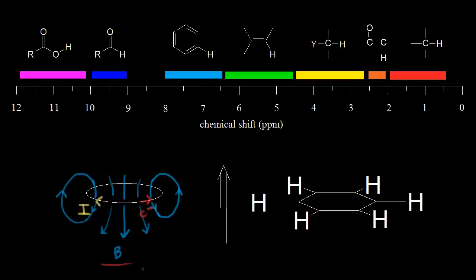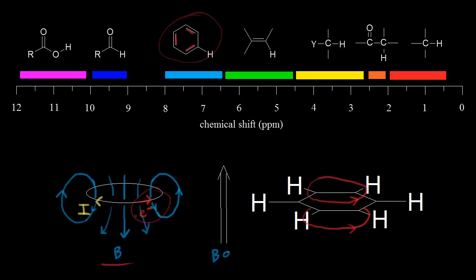If we think about benzene, benzene has six pi electrons. So up here is benzene — let's go ahead and identify the pi electrons: two, four, and six. If we put benzene in an applied magnetic field B-naught pointing up, those six pi electrons are going to circulate to create an induced magnetic field. The pi electrons are going in this direction, and therefore the induced magnetic field will be pointing down at the very center.